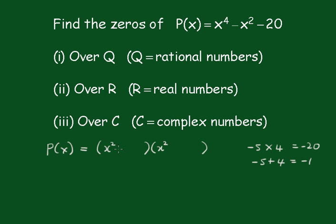So that's (x squared minus 5) and (x squared plus 4). Therefore, x squared minus 5 equals 0, or x squared plus 4 equals 0.